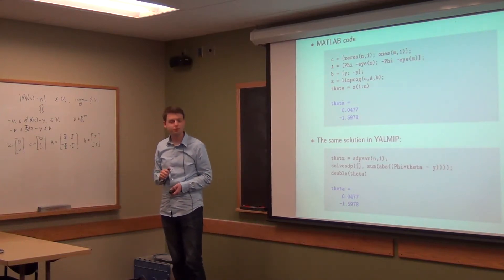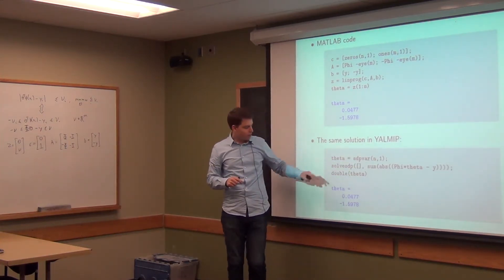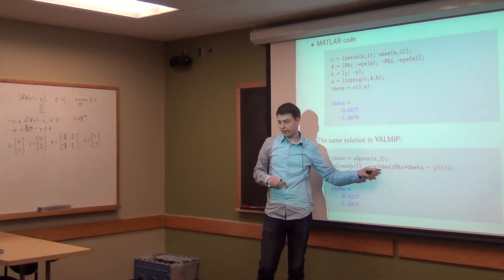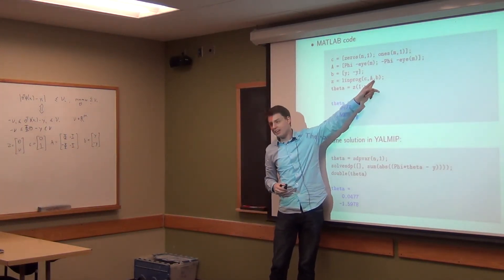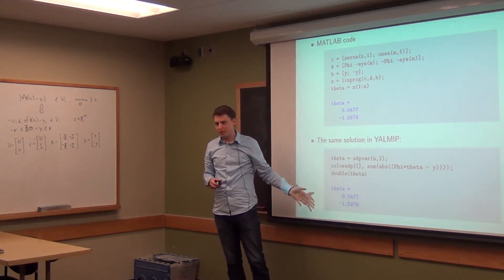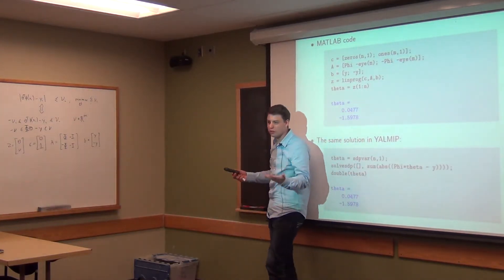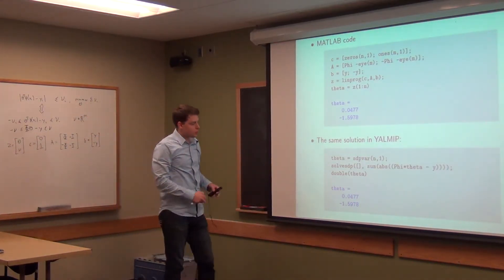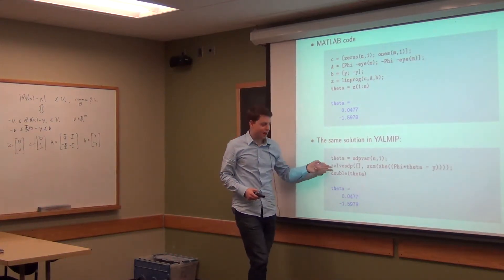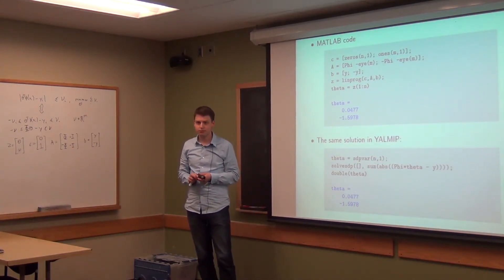What was the first parameter for solvesdp? That parameter is constraints — solvesdp takes a set of constraints and then the objective function. In this case we could put the constraint A ≤ B and solve it as a linear program. But it's easier to just put in the objective only, since here there aren't really constraints — there are only constraints because we added these slack variables. In the simple case there are no constraints, so you pass the empty matrix.